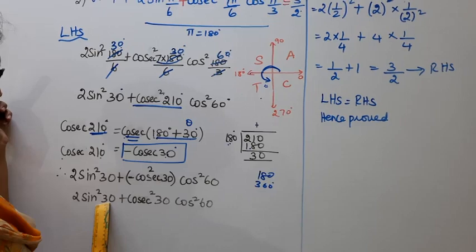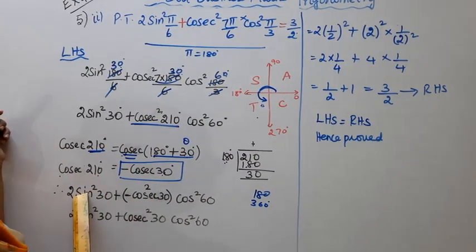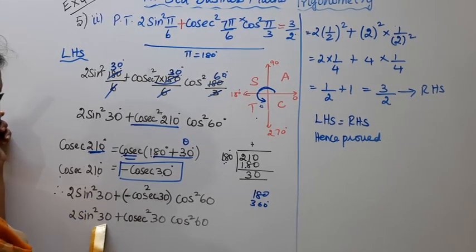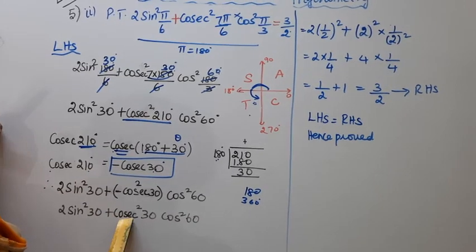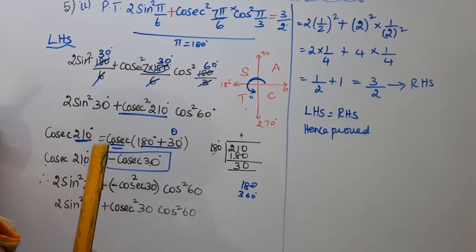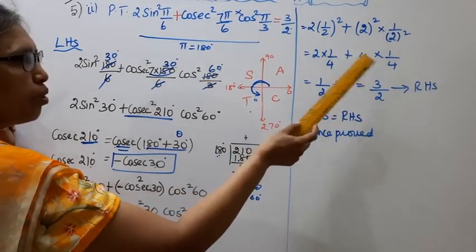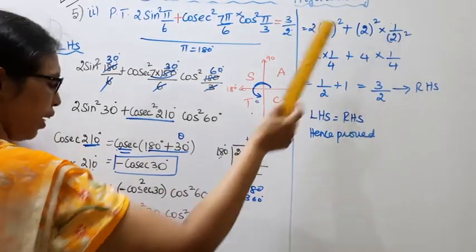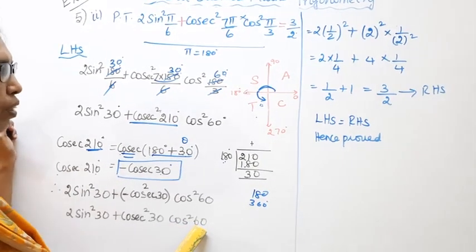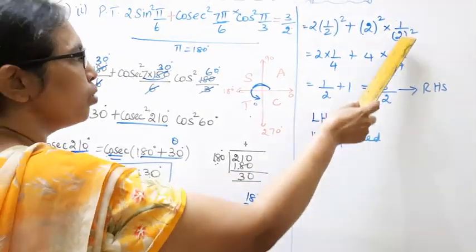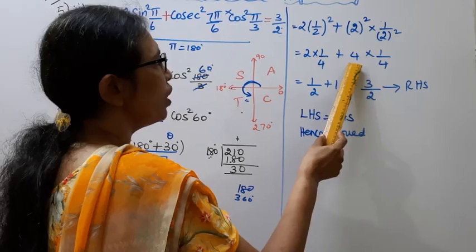2 into sin 30 value, which is 1 by 2 squared, minus cosecant 30. Sin 30 is 1 by 2, so cosecant 30 is the reciprocal, which is 2. So 2 squared into cos 60, which is 1 by 2 squared.